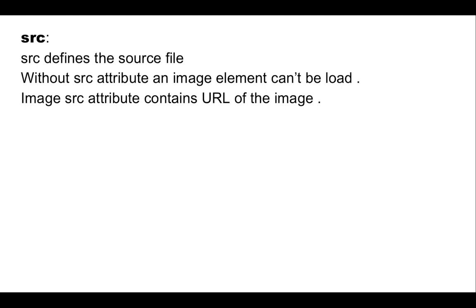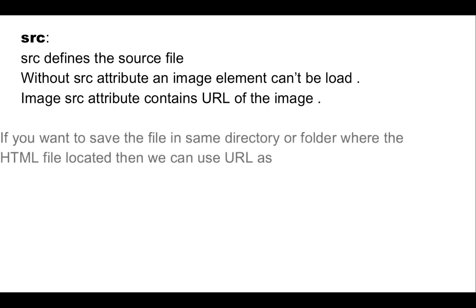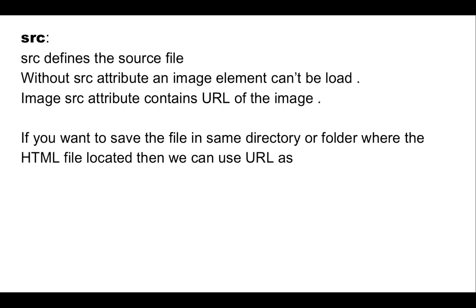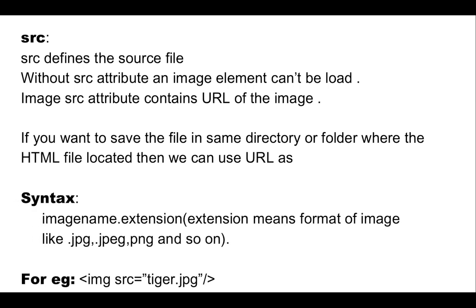The src attribute defines the source file. Without the src attribute, an image element cannot be loaded. The image src attribute contains the URL of the image. If you want to save the file in the same directory or folder where the HTML file is located, then the URL syntax is: image name dot extension, used as the value of the src attribute.